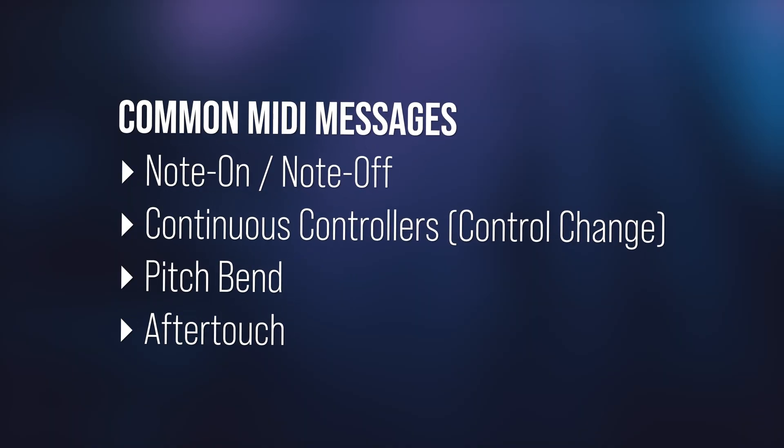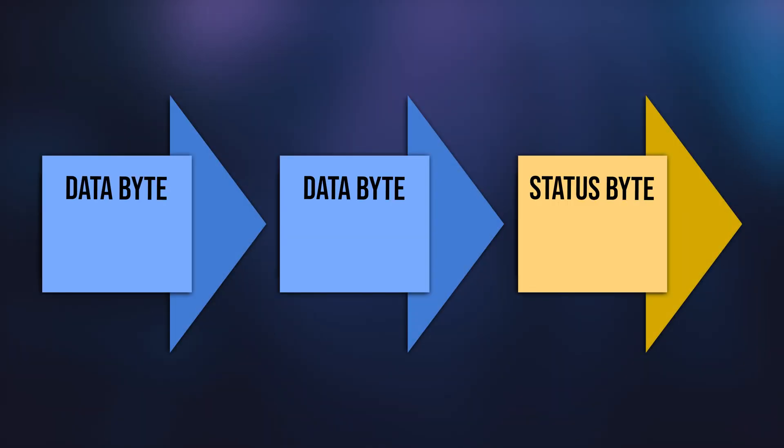To understand how MIDI works, it's really important to understand MIDI message structure, and while there is a lot of technical jargon I could include, I'm going to keep this to a minimum and focus on just the most important details. Most common MIDI messages, such as a note-on message, are composed of three pieces of digital information, or bytes: a status byte followed by two data bytes. The status byte determines the type of MIDI message being sent, with the note-on message being the most common.